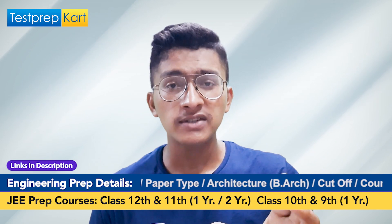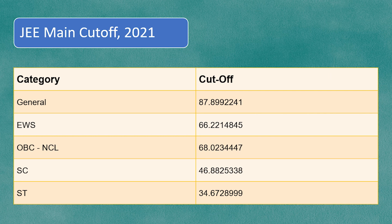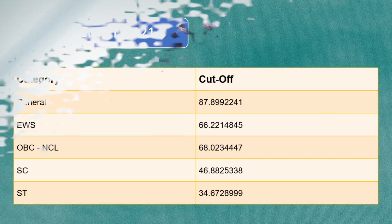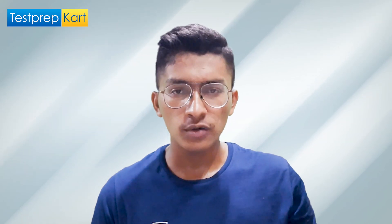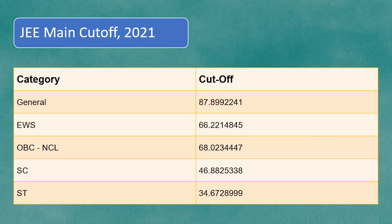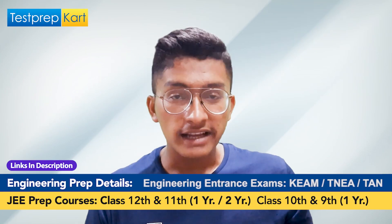In 2021, the cutoff for General category is 87.8992241 percentile. If your percentile is even 0.00001 less, you will not be qualifying for Advanced. For EWS it is 66.2214845, for OBC-NCL it is 68.0234447, for SC it is 46.8825338, and for ST it is 34.6728999. These are the respective cutoffs for all the categories.